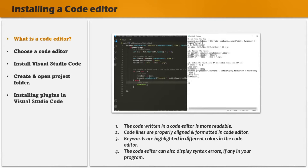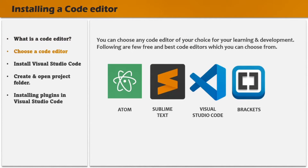But if you don't already have a code editor installed on your machine, you can choose from these options: Atom, Sublime Text, Visual Studio Code, or Brackets. All of these are code editors and they are free to use — you can choose any one of them. But in this course I will be using Visual Studio Code, and if you want to follow along with me, you can also download and install Visual Studio Code.